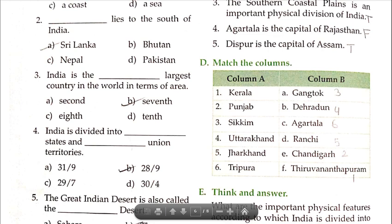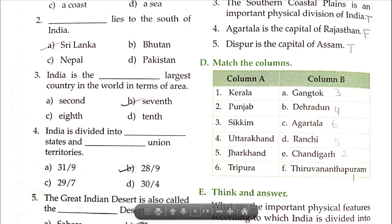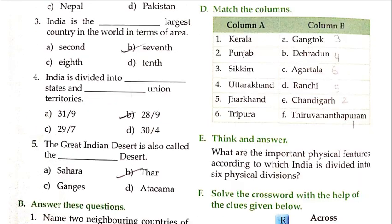Match the columns: 1-E) Punjab's capital is Chandigarh. 2-E) Sikkim's capital is Gangtok. 3-A) Uttarakhand's capital is Dehradun. 4-B) Jharkhand's capital is Ranchi. 5-D) Tripura's capital is Agartala. 6-C. Note this down in your copy and memorize it.